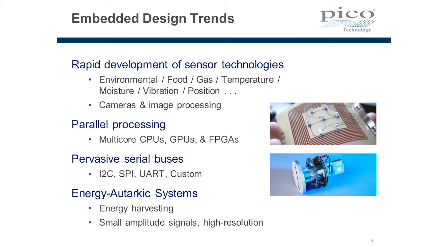We're also seeing the introduction of a number of parallel processing techniques — multi-core central processing units, graphics processing units, and field programmable gate arrays. Embedded systems contain pervasive serial buses everywhere: I2C, SPI, UART, and custom serial protocols. And we're seeing a number of low energy systems employing energy harvesting techniques with very small signal amplitudes that require high resolution measurements to validate their characteristics.